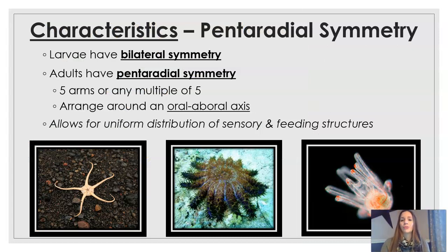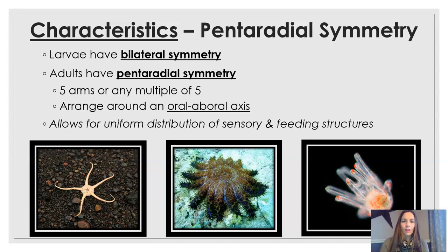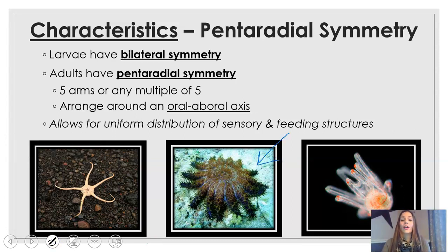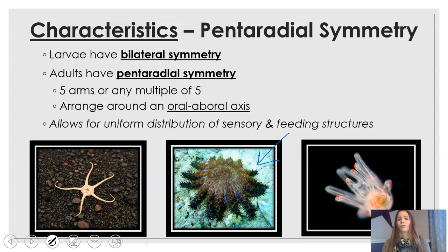A little bit more about pentaradial symmetry — penta is five. The larvae have bilateral symmetry, but once they develop into adults, they have this pentaradial symmetry in fives. When we think of an echinoderm or a sea star, we typically think of something with five arms, but there are others that can have multiples of five. The organism in the bottom middle of the slide has 15 arms — that's a Crown of Thorns sea star. It's also this arrangement around an oral-aboral axis: the oral end is the mouth on the bottom, and the aboral is on the top. This allows for uniform distribution, so every arm has sensory and feeding structures within it.